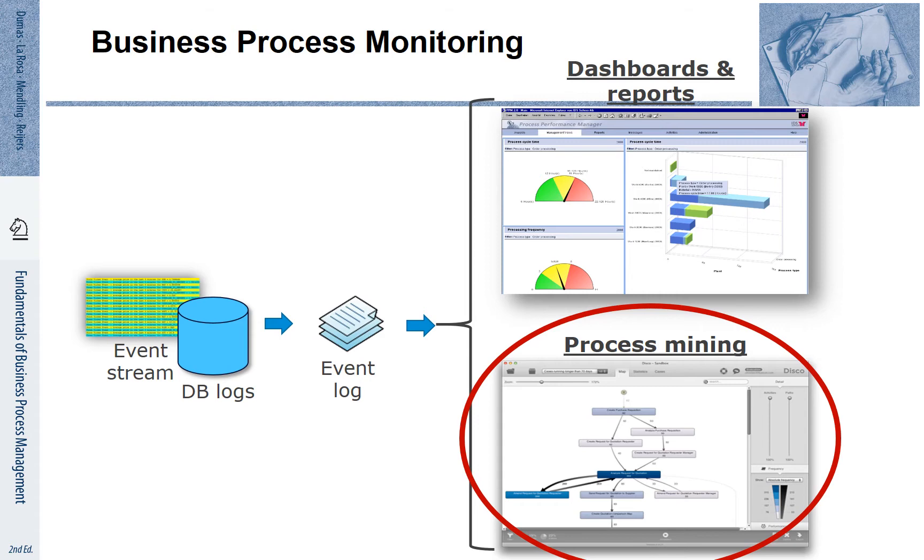The key input to these different types of process monitoring support are event logs. Event logs capture data of processes that have been executed as much as they are represented in databases and in event streams.